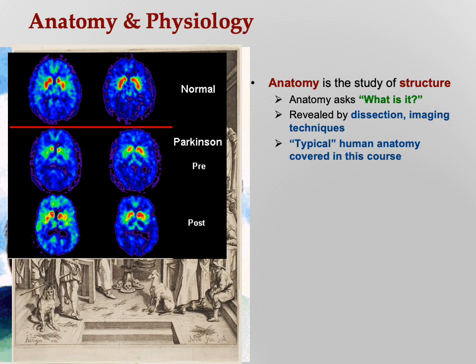PET scans are used a lot to find brain tumors, and also for some functional imaging — used by various quacks who will charge you thousands of dollars and claim they can tell things about your personality. Where you see red, that's the most active part of the brain; yellow is second most, then green, then blue.